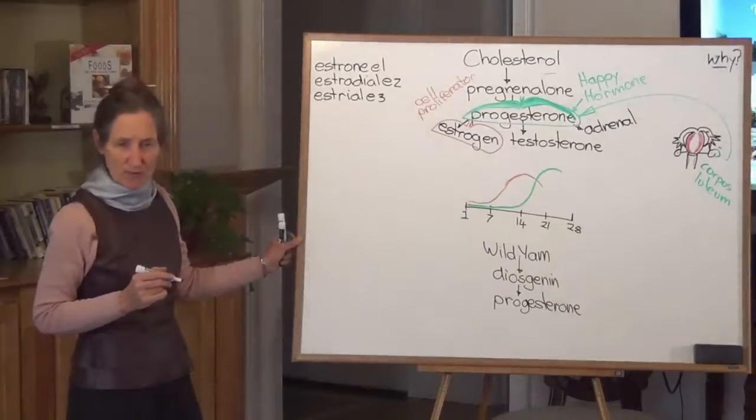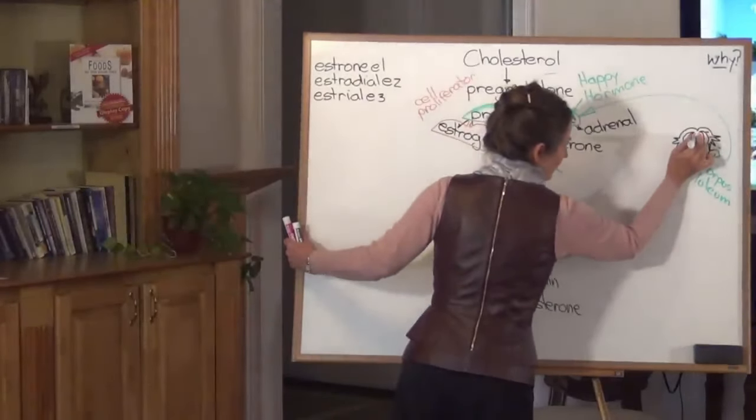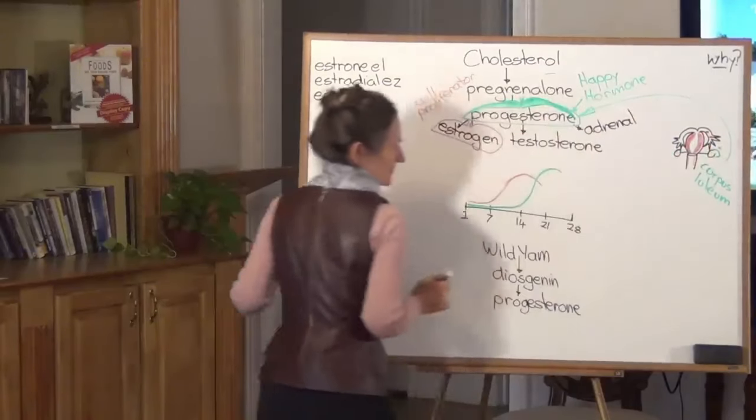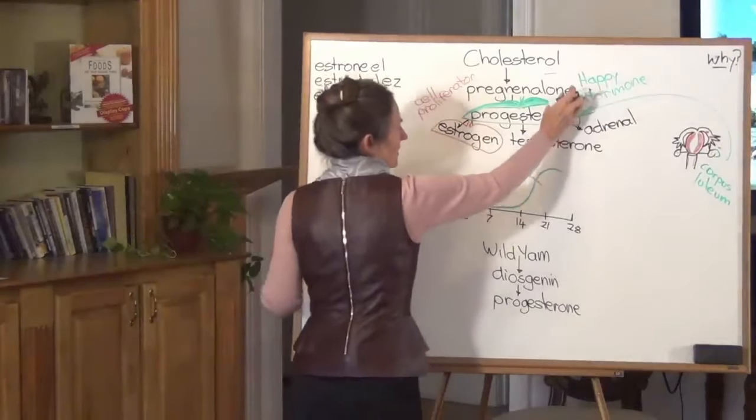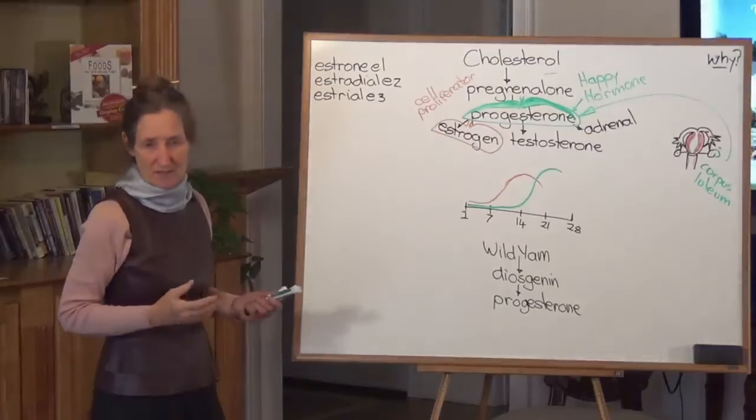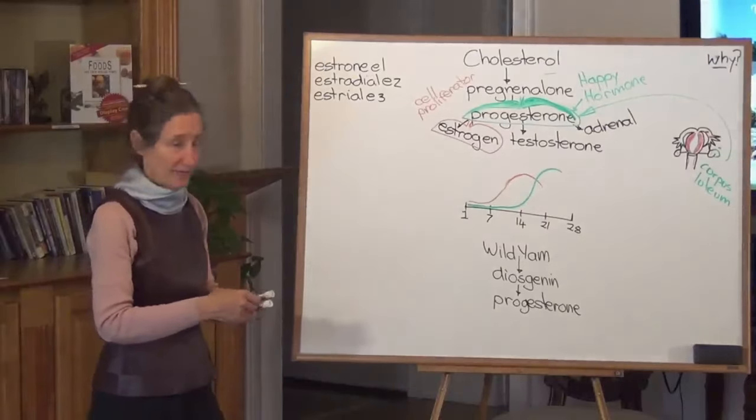So what effect does progesterone have? Progesterone has a ripening effect on the lining of the uterus, putting the finishing touches on the uterus. Progesterone also heightens a woman's mood at this time of the month to the point of increasing her sexual desire at this time of the month. But progesterone has another effect.